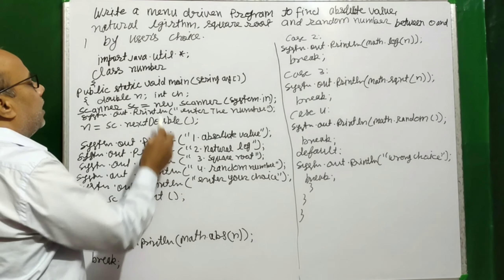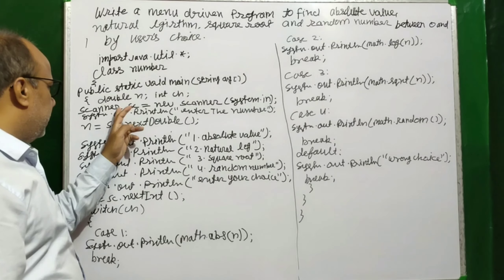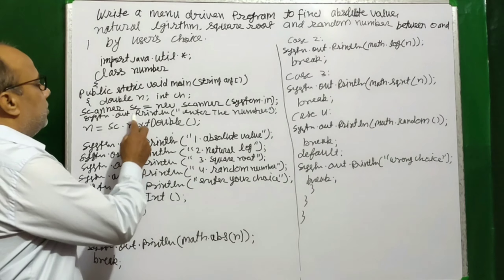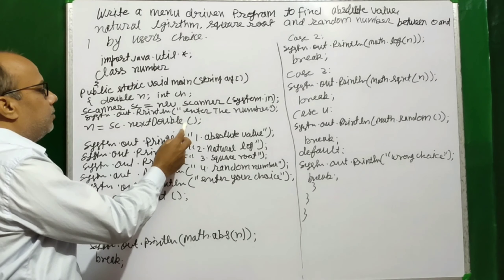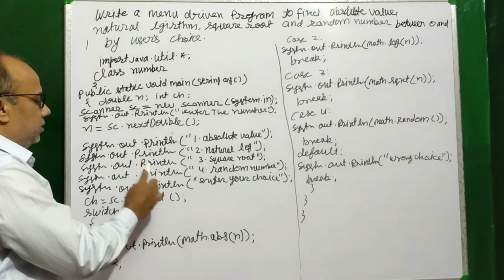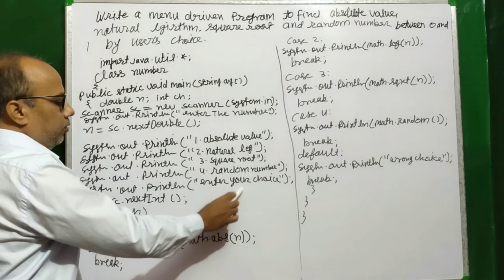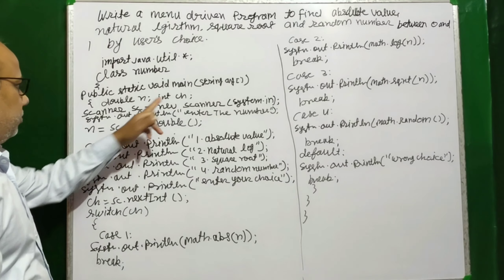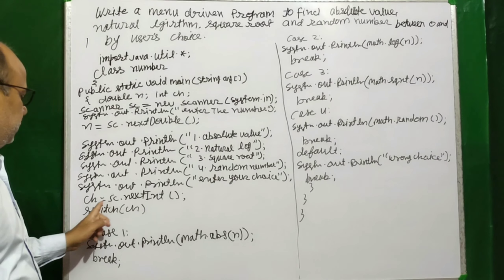Input लेंगे और integer में ले लिया। User जिसमें अपनी input करेगा। अब object बनाएं Scanner class का — Scanner sc नाम से, equal to new Scanner(System.in)। Print करें: Enter a number। पहले हमने input लिया, इसके बाद Enter your choice।